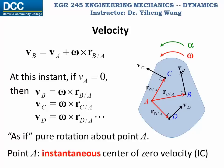Pay attention to the word 'instantaneous,' which indicates that point A only has zero velocity at this instant, and at this instant alone can it be considered as the center of rotation. If we can identify the instantaneous center of zero velocity for a rigid body at a given instant, then the general plane motion reduces to pure rotation, which is a lot easier in terms of calculation.